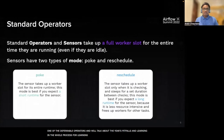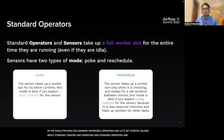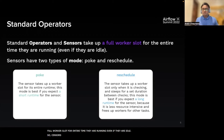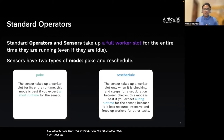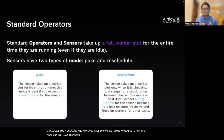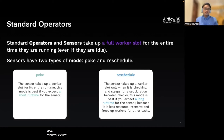Standard operators and sensors take up a full worker slot for the entire time they are running, even if they are idle. Sensors have two types of modes: poke mode and reschedule mode. Let me give you a scenario — imagine you have 100 worker slots available to run tasks, and you have 100 DAGs waiting on a sensor that are currently running but idle. Then you cannot run anything else, even though your entire Airflow cluster is essentially idle.